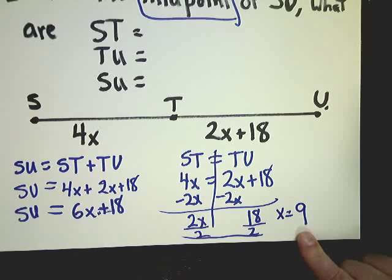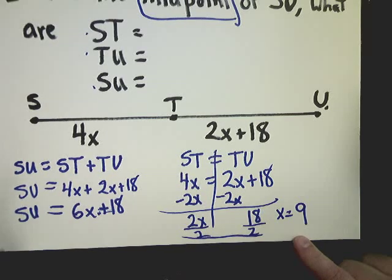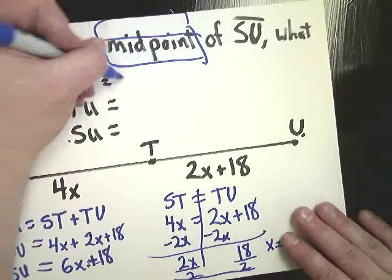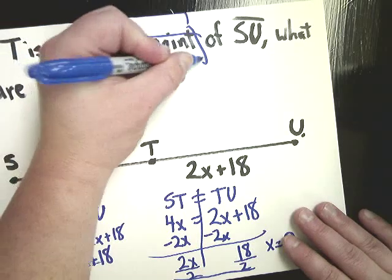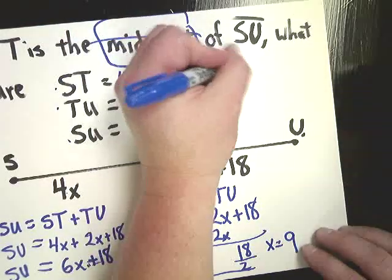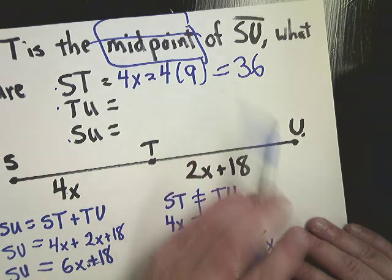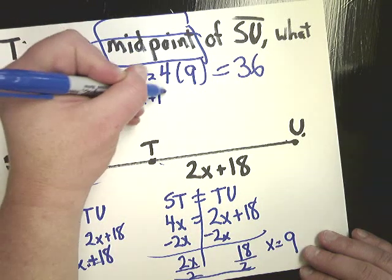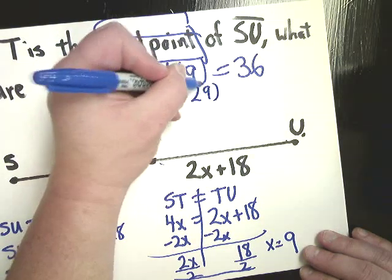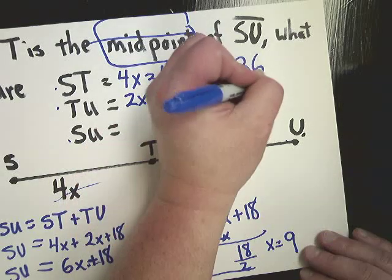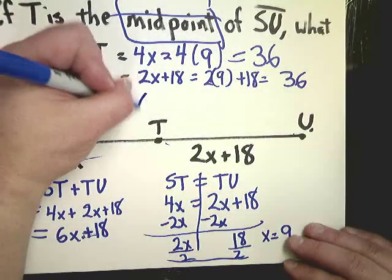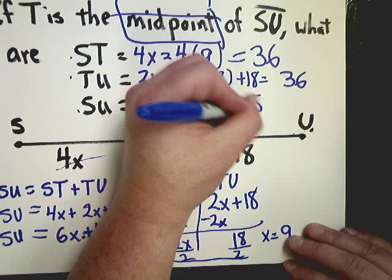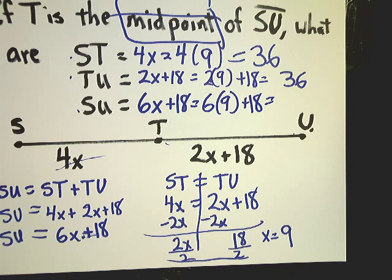You might see 9 in one of your answer choices if you're doing multiple choice, but that is not the answer to the question. None of these things request what x is. They want to know what ST is, TU, and SU. So, what I'm going to do is write ST is equal to 4x. It's equal to 4 with parentheses around it. And I'm going to plug in the value of x. So, ST should be 36. TU, which, by the way, should also be 36 if it's a true midpoint, because this should equal this, right? So, we're going to test and see if that's true. 2x plus 18 equals 2 times 9 plus 18, which is 18 plus 18, which does give you 36. And your SU is 6x plus 18. 6 times 9 is 54 plus 18 gives you 72.